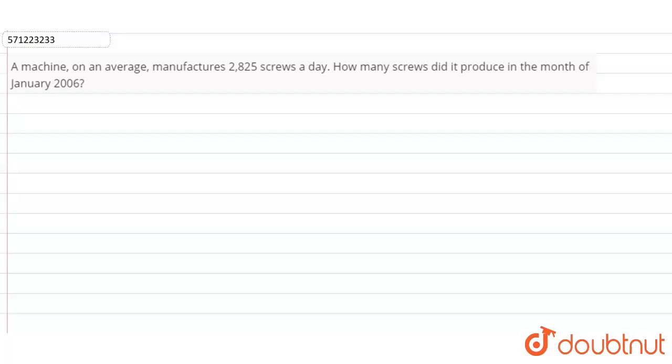A machine, on an average, manufactures 2,825 screws a day. How many screws did it produce in the month of January 2006?